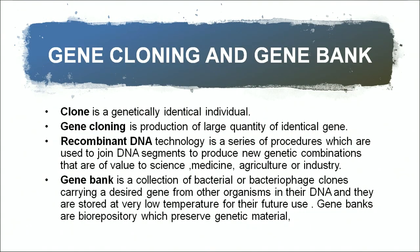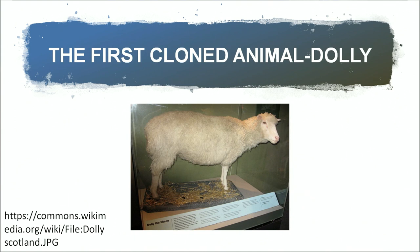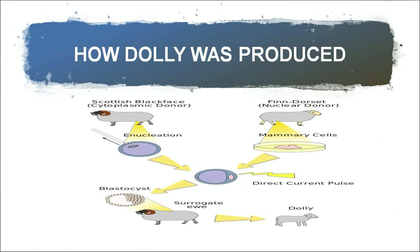What is gene cloning and what are gene banks? A clone is a genetically identical individual, meaning all the genes of the parent and offspring are the same. Gene cloning is the production of large quantities of identical individuals. The first cloned animal was Dolly the sheep, cloned using udder cells. In Finn Dorset, as seen in the diagram, the nucleus from the udder cell was used.